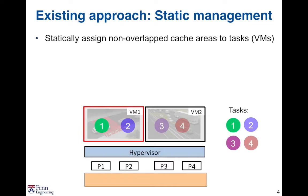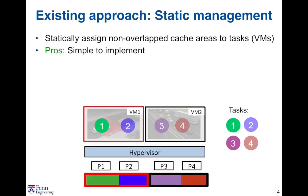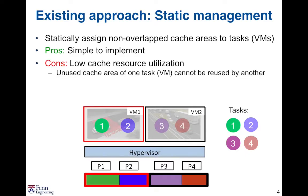The existing approach uses static cache management, which statically assigns non-overlapped cache areas to tasks or VMs. Because these tasks are no longer using the same cache area, they will not evict out each other's cache content. This approach is simple to implement because we don't need to dynamically change the cache partitions for the task once the system is set up. However, we have to reserve the cache for each task based on its worst-case cache requirement. Although this task may not use all of its reserved cache areas in most of its lifetime, we cannot reuse the cache areas that are not currently used by a task. So this will lead to low cache resource utilization.